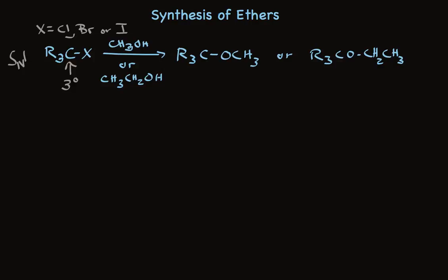Using a protic solvent that also is a good nucleophile like methanol or ethanol, you can make tertiary ethers directly from the alkyl halide. Choose methyl alcohol to get the methyl ether. Choose ethyl alcohol to get the ethyl ether.